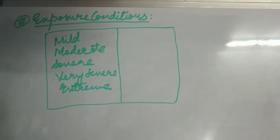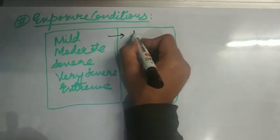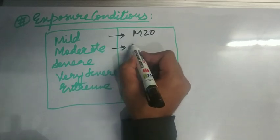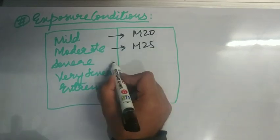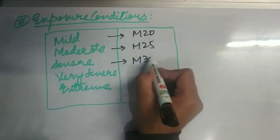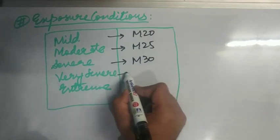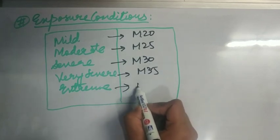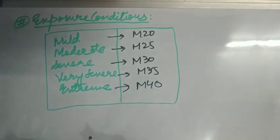For mild exposure condition, minimum grade to be used is M20. You must remember. For moderate condition, it is M25. For severe, it is M30. For very severe exposure condition, it is M35. And for extreme condition, it is M40. So these were the grades of concrete to be used on the basis of exposure conditions.